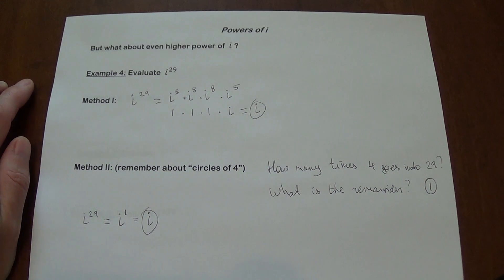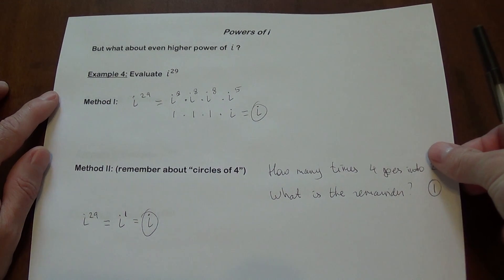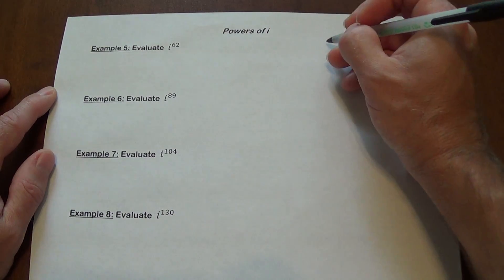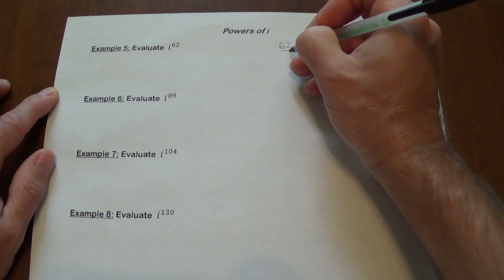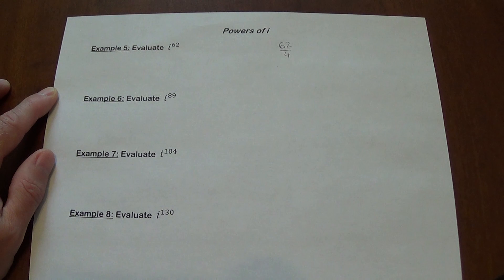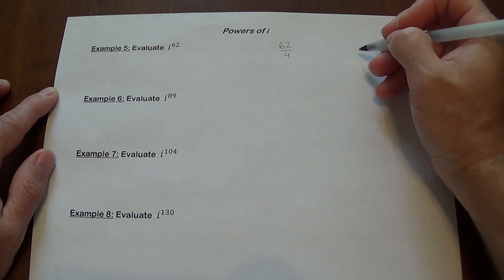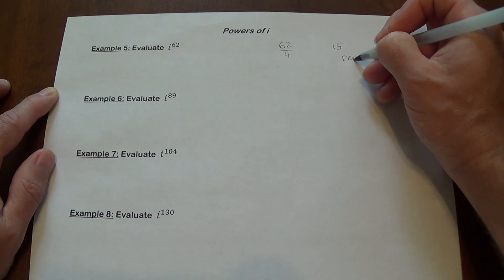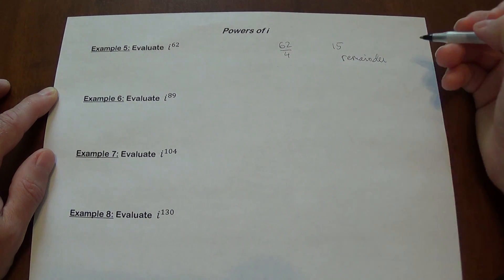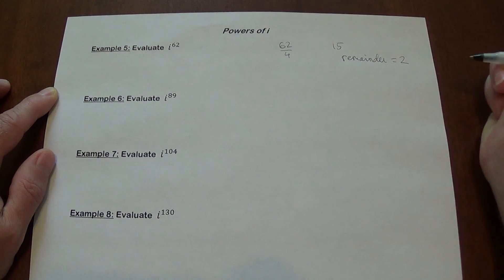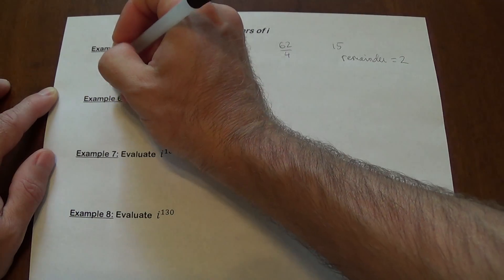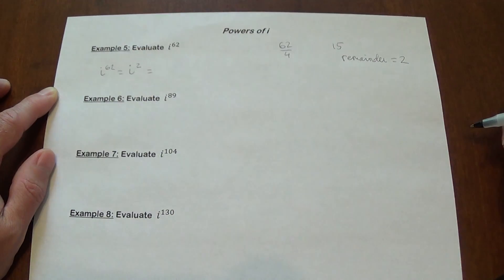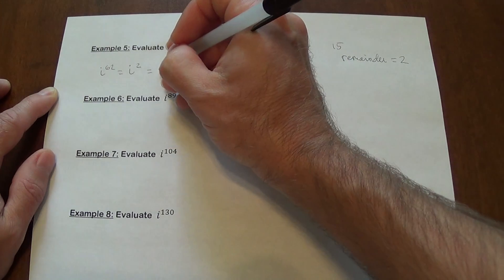Let's use this second method with the powers that you're going to see in the examples that follow. i to the power 62. If you divide 62 by 4, 62 divided by 4 is going to give us what? We're going to get 15. 4 goes into 62, 15 times. And the remainder, because 4 times 15 is 60, the remainder is going to be 2. That means that i to the power of 62 is going to be exactly the same thing as i squared based off the remainder. And i squared, as we know, is negative 1.